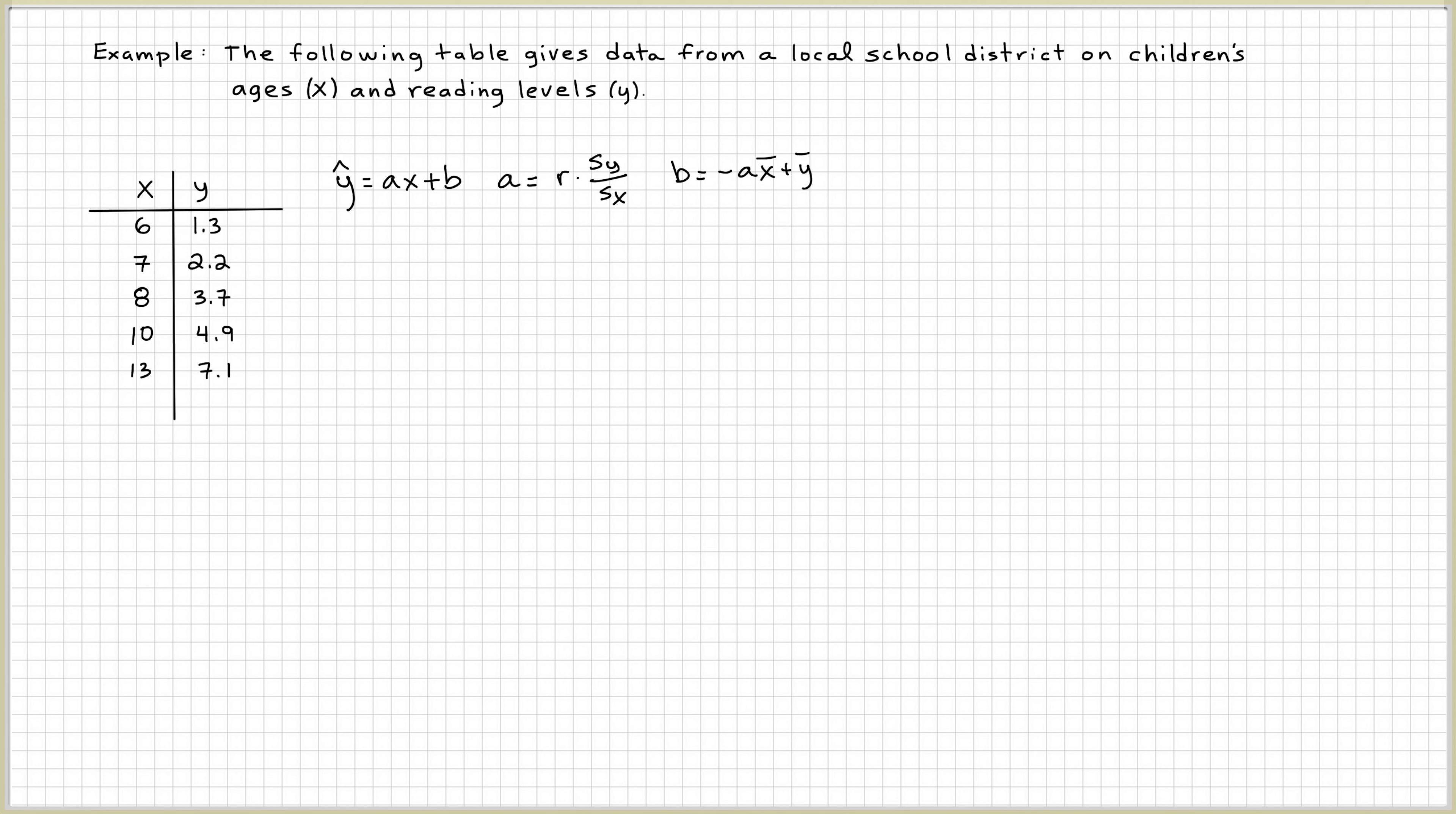So here we have a table that describes the ages of children and their reading level. We got one, two, three, four, five pairs. So we're going to need to calculate r, sy, sx. sy is the standard deviation for y, the standard deviation for x. This guy right here, which is x bar and y bar. So one thing that you could do is to find these using your calculator.